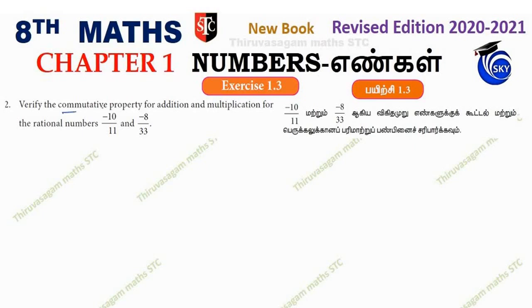The question is verify the commutative property. Commutative property is in Tamil and English. Commutative property is for addition and multiplication. Let's look at the rational numbers.